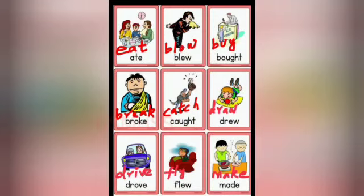Look at this example. These words are different words. We can also call them irregular verbs: eat → ate, blow → blew, buy → bought, break → broke, catch → caught, draw → drew, drive → drove, fly → flew, make → made.